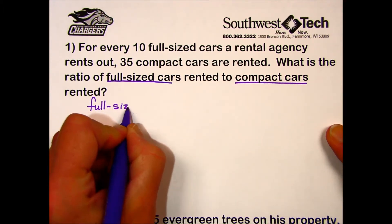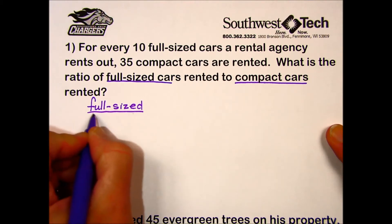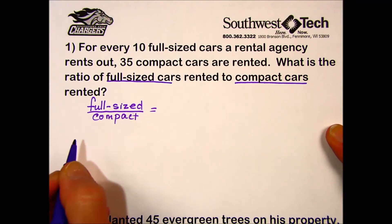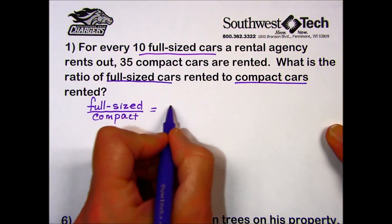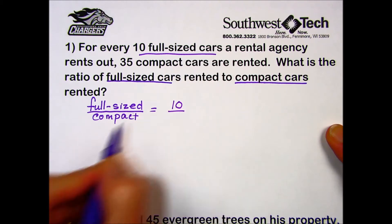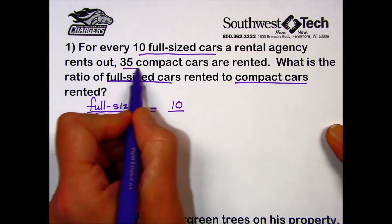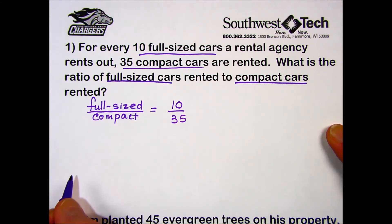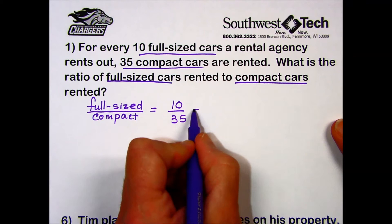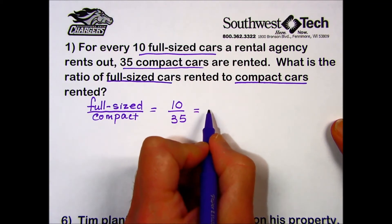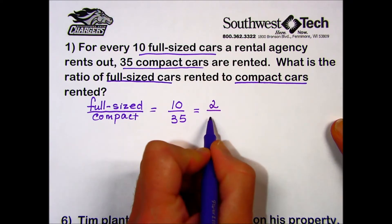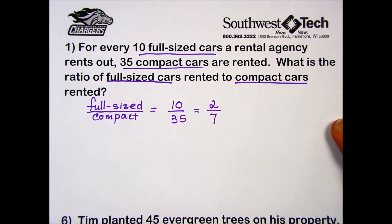Full-size to compact — then we'll chase down the information from the problem. It starts out with the number of full-size cars; we'll replace that with a 10. It tells us further on that there are 35 compact cars. So our ratio of full-size to compact is 10 to 35. Always want to look to see if you can reduce that. Since each of these terms has a factor of five, this will reduce to two-sevenths when we divide each term by five.